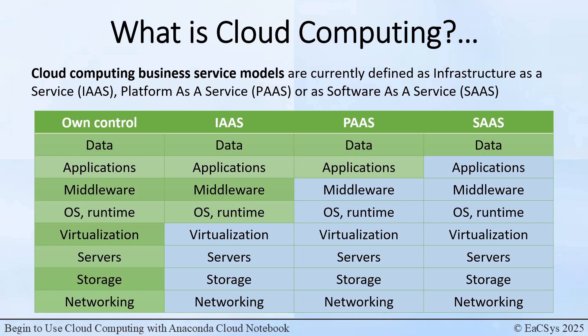In the video on your screen, you can see a chart displaying your own controlled computer or a company's own computing solution to the left, and the three cloud computing business service models to the right. When you, as a private person, are using your own laptop, you have control over the laptop, its operating system, and programs — although most of the decisions are predetermined for you when you purchase your laptop with an operating system, pre-installed programs, and limitations due to the purchased operating system.